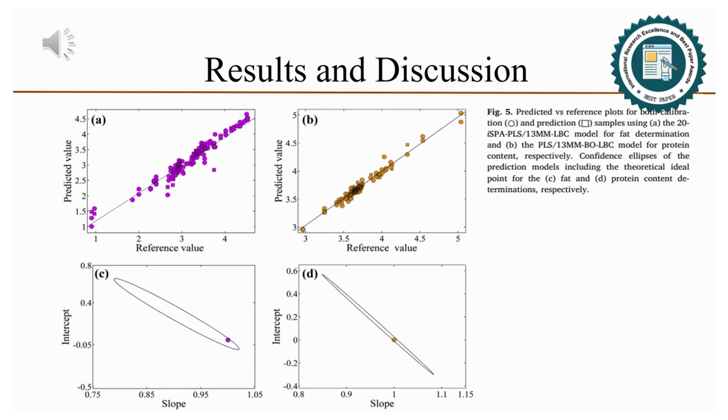AJCR test was then applied and demonstrated that the ellipses of the prediction models include the theoretical ideal point for fat and protein determinations, respectively, and therefore they have no biased results.